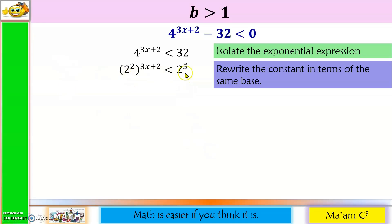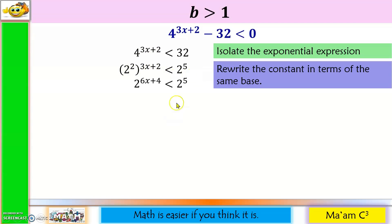Now I'll simplify by multiplying the exponents. 2 times 3x is 6x, and 2 times 2 is 4, so I'll have 2 raised to 6x plus 4. And then I'll just copy the other side: 2 raised to the 5th.